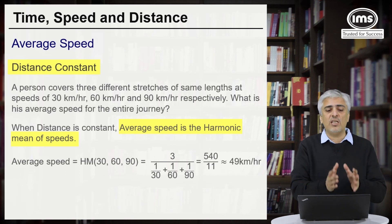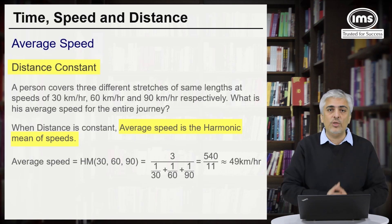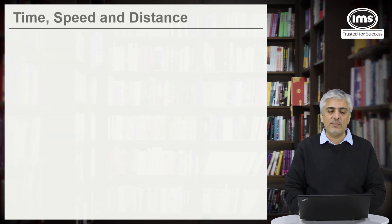So whichever method you use, if you can remember that whenever distance is constant, you have to use harmonic mean, great you can use that. If you don't, you can use average speed as total distance upon total time. Let's look at example three of the same for one more example on average speed.